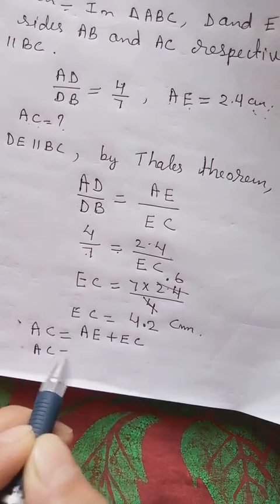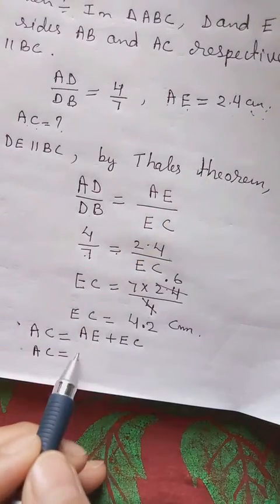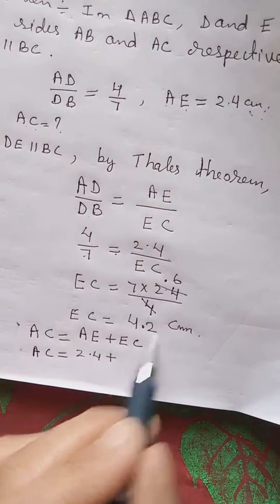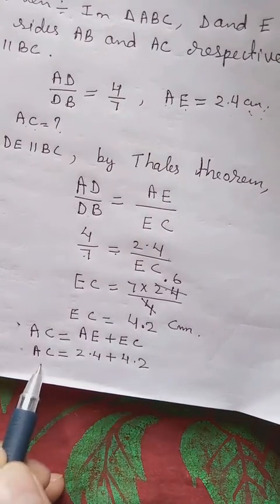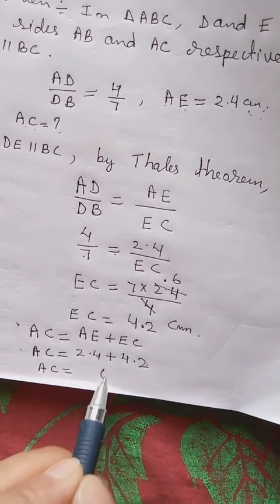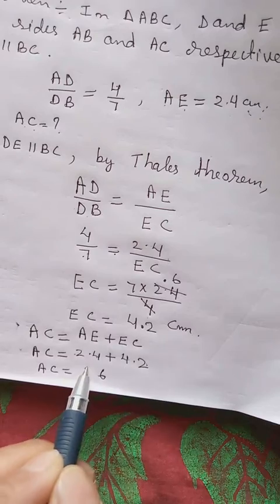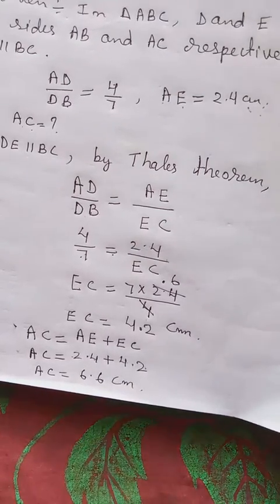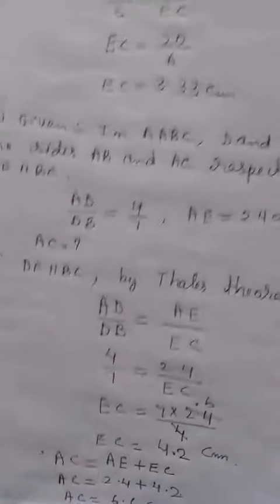AE we know from given, 2.4. EC we already get from calculation, 4.2, which means AC will be equal to 4 plus 2.6. So AC equals 6.6 centimeters. We get what the question wants. That's the end of it.